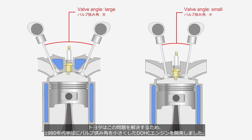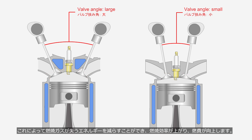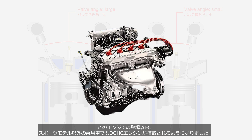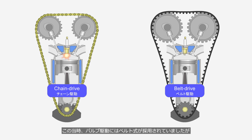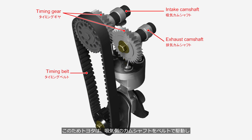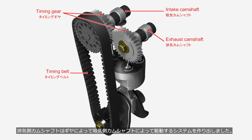To address this issue, Toyota developed a DOHC engine with a smaller valve angle in the mid-1980s. This allowed for a reduction in the energy lost by the combustion gases, improving combustion efficiency and increasing fuel economy. Since the introduction of this engine, DOHC engines have been used in passenger cars, not just in sports models. At that time, a belt drive system was used for valve actuation. But as mentioned earlier, belt drive systems cannot use small sprockets. Therefore, Toyota developed a system where the intake camshaft was driven by a belt and the exhaust camshaft was driven by the intake camshaft through gears. When chain-driven systems, which allow the use of smaller diameter sprockets, became more common, this system gradually disappeared.